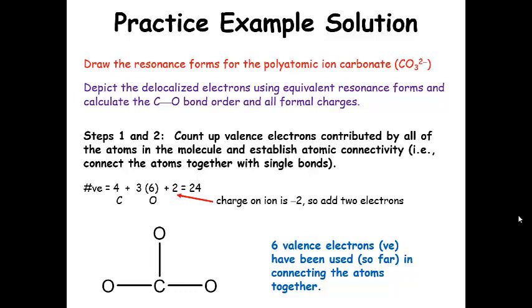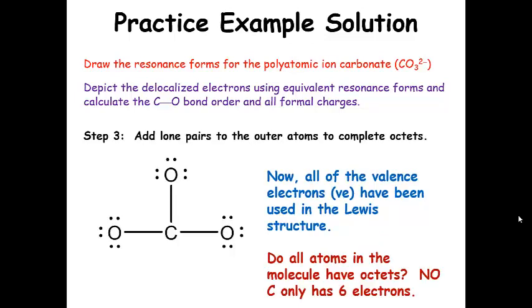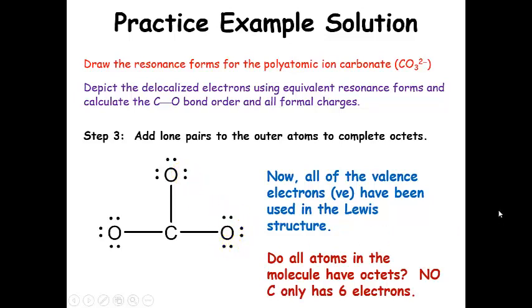For step three, we add lone pairs to the outer atoms to complete octets on all those oxygens until we run out of electrons. We've used six already, so continuing: eight, ten, twelve, fourteen, sixteen, eighteen, twenty, twenty-two, twenty-four. We have used all of the electrons at this point.